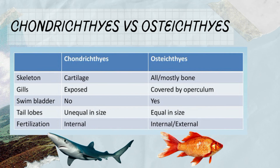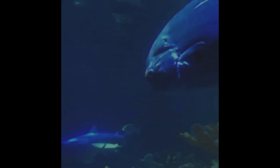In Osteichthyes, if scales are present, there are various types including ganoid, leptoid, cycloid, or ctenoid scales. The gills of Chondrichthyes are not covered by an operculum, while the gills of Osteichthyes are covered by the operculum. Chondrichthyes do not have a swim bladder, while Osteichthyes have a swim bladder — also known as an air bladder or gas bladder — for buoyancy. In terms of fertilization, Chondrichthyes often have internal fertilization, while Osteichthyes can have external or internal fertilization. The tail lobes of Chondrichthyes are unequal in size, while those of Osteichthyes are equal in size.